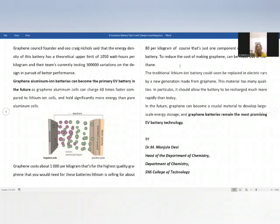In particular, it should allow the battery to be recharged much more rapidly than today. So in the future, graphene can become a crucial material to develop large-scale energy storage, and graphene batteries remain the most promising electric vehicle battery technology.